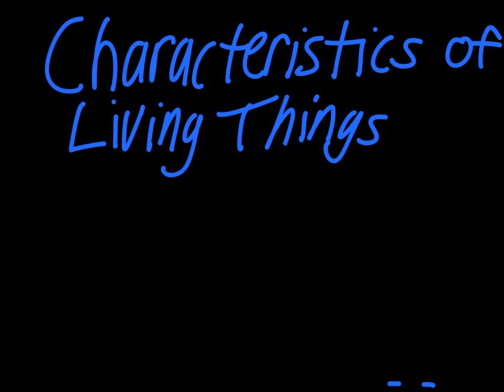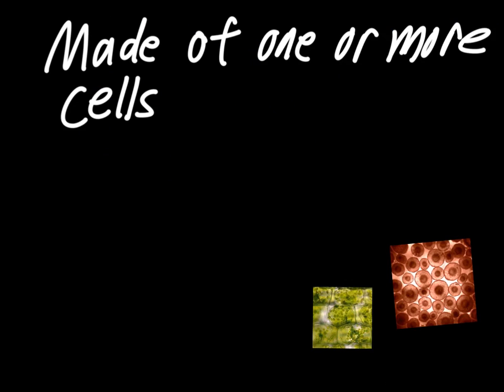As we work our way through the first four characteristics, you'll see how this is different from requirements that living things have for their survival. The first major one is the idea that all living things are made of one or more than one cell.